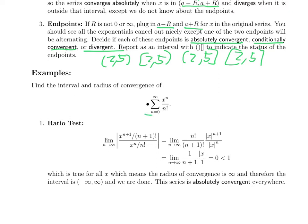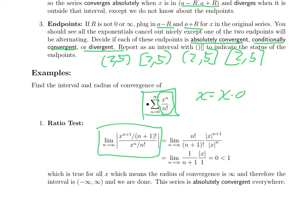Let's take an example. Our first example is the sum from n equals 0 to infinity of x to the n over n factorial. Since x equals x minus 0, we can think of this as a power series centered at 0. Most of our power series will be centered at 0. So you plug this expression into the limit of the ratio test: on the denominator you put x to the n over n factorial, and in the numerator all those n's become n plus 1.